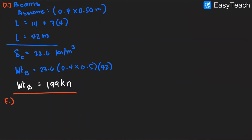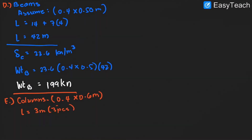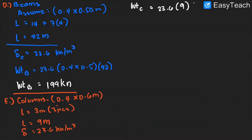Next is the weight of the columns. The column was designed with a dimension of 0.4 by 0.6 meters. The length of the columns is 3 meters based on our tributary width analysis, with 3 columns — so 3 times 3 pieces gives a total column length of 9 meters. Density is 23.6 kN/m³. The weight of the column equals 23.6 times 9 times 0.4 times 0.6, giving 50.976 kilonewton, rounded to 51 kilonewton.